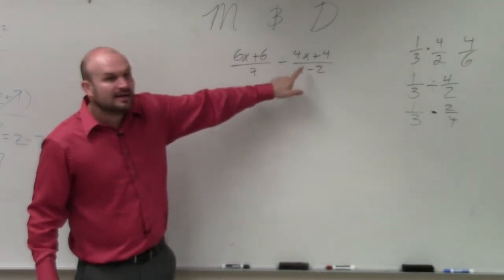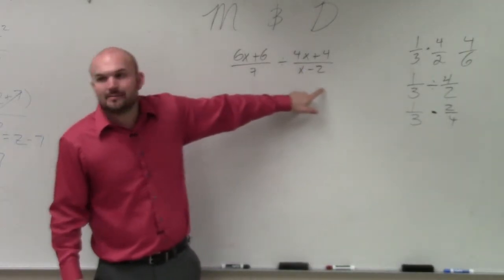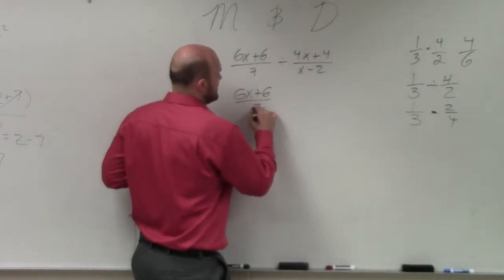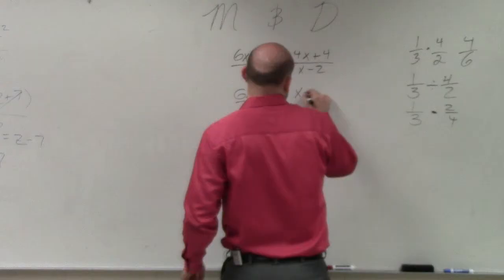Then you can go ahead and multiply across. So on this example, ladies and gentlemen, here is my divisor. I'm going to be doing the exact same thing. I'm going to take (6x + 6) / 7 and multiply it by its reciprocal.